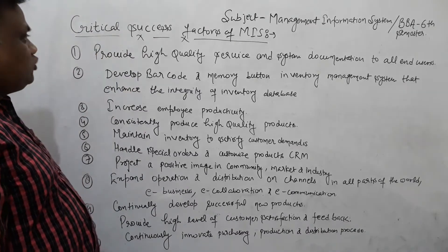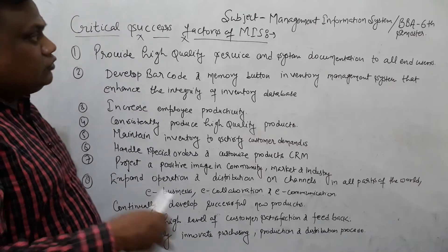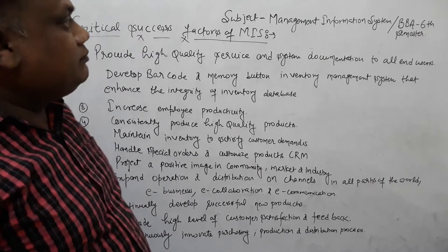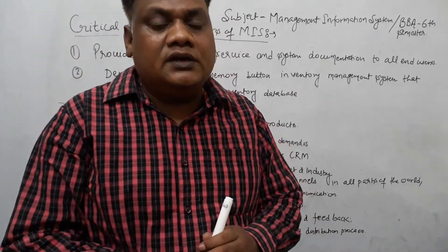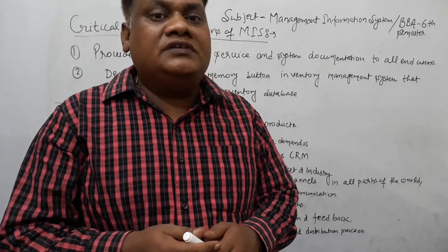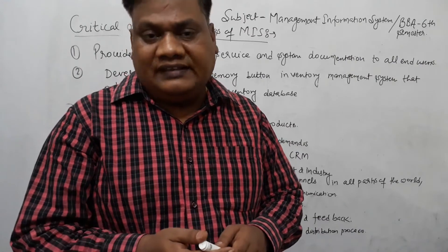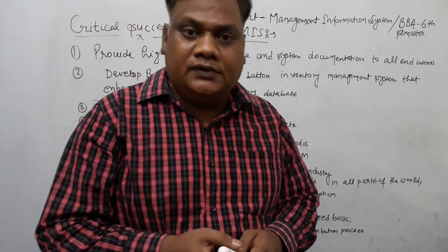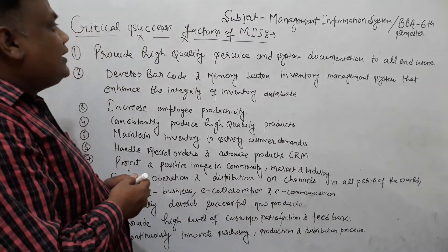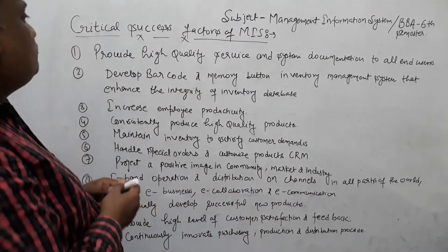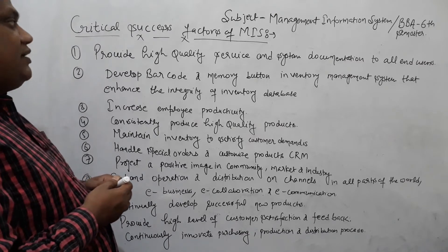Today is our topic. First of all, we have discussed the advantages of strategic planning — this is our topic which we have completed on YouTube online successfully. And in this sequence, today for BBA 6th semester, our very important topic is Critical Success Factors of MIS.